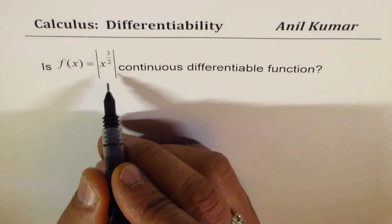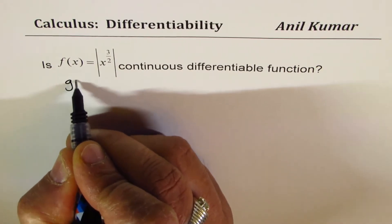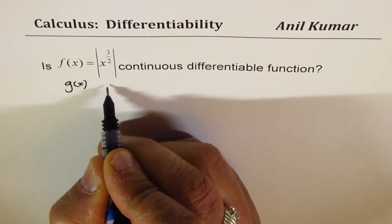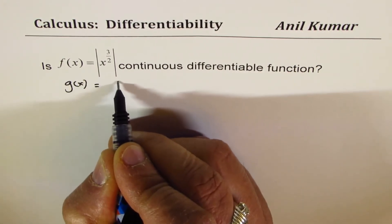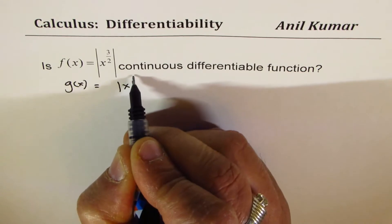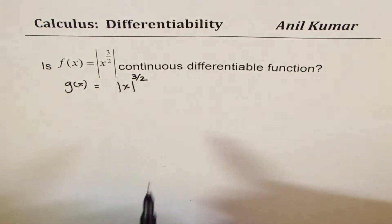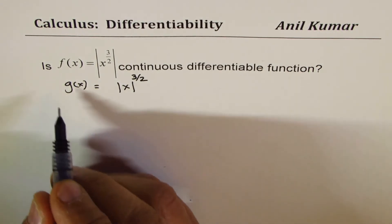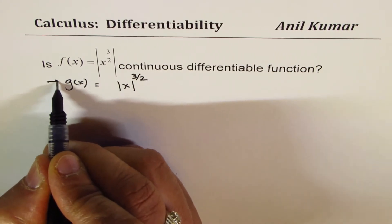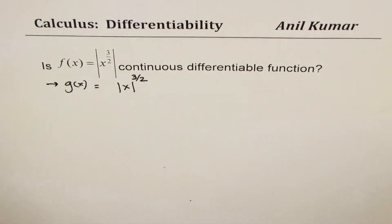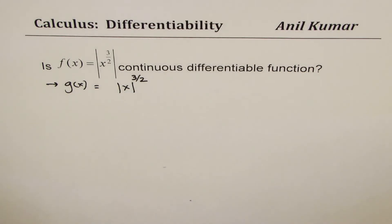I couldn't really get this question properly. It could have been either interpretation, so I'll write the other function as g of x equals 2 absolute value of x to the power of 3 over 2. So in this particular example, I will consider two functions — also g of x, which is absolute value of x to the power of 3 over 2.